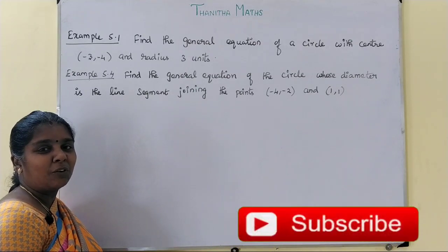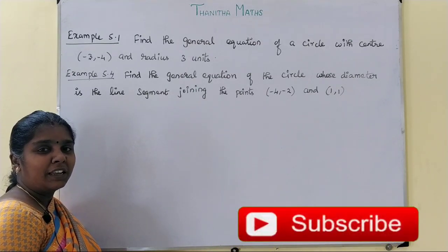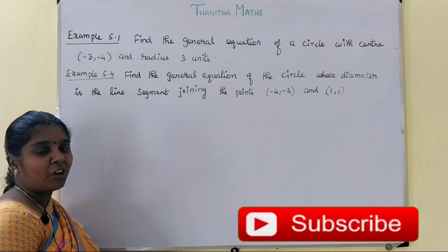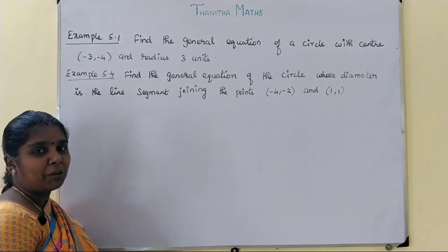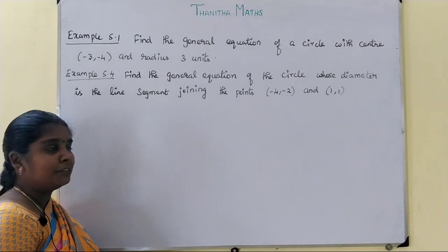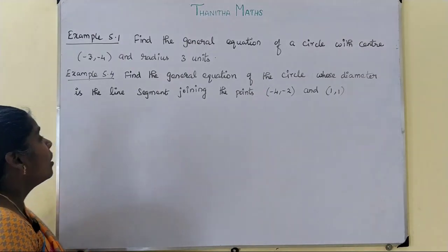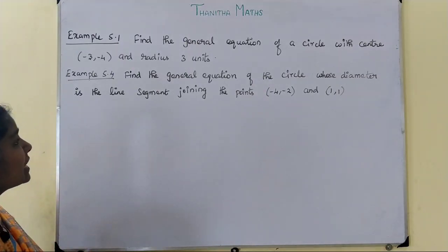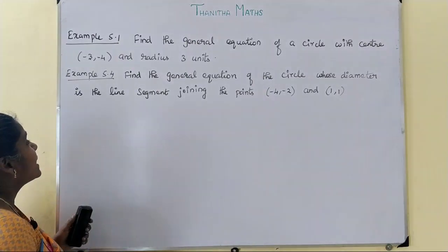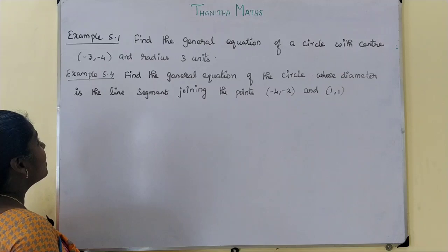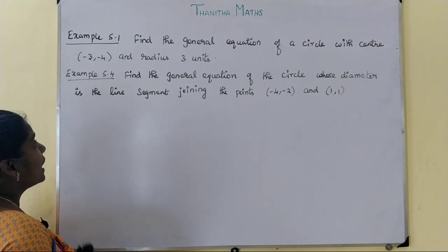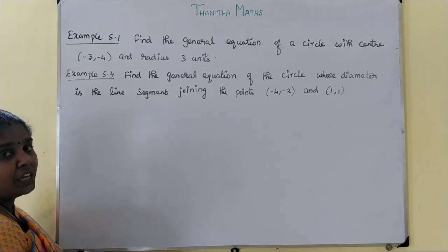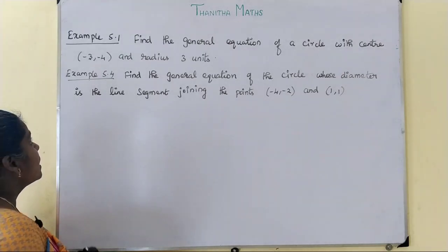Welcome students. Now we are going to talk about example 5.1 and 5.4. Find the general equation of a circle with the centre minus 3, minus 4 and radius 3 units.